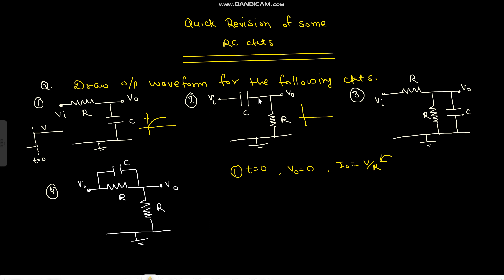For the second circuit, initially there is no charge on the capacitor, so the output V_out equals the input V at T equals zero. The current at T equals zero is V by R. Now at T equals zero the capacitor behaves as a short circuit, so V_out equals V_in. At T equals infinity, the capacitor acts as an open circuit, so V_out will be zero.